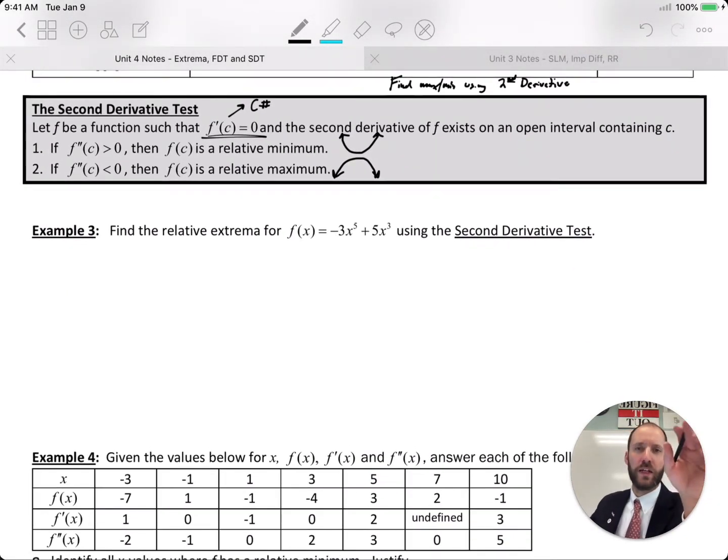So it's another way to find maxes and mins. Me, personally, I prefer the first derivative test, but sometimes the information they give you moves you towards using the second derivative test. For example, they say here are some critical numbers at x equals 2, 3,